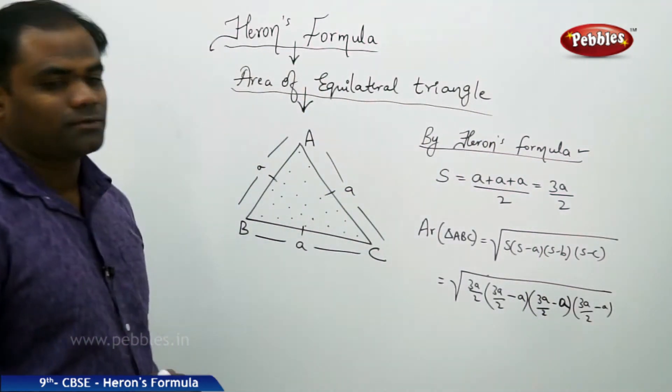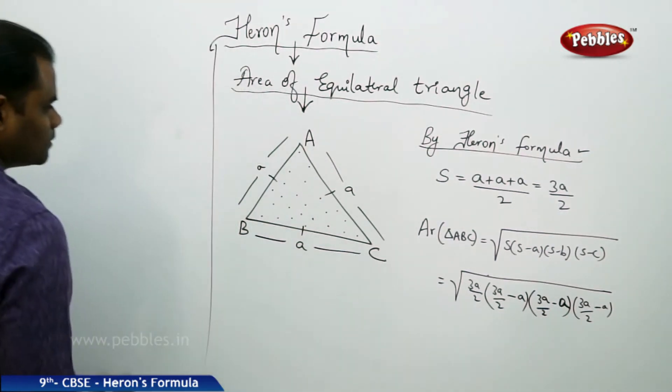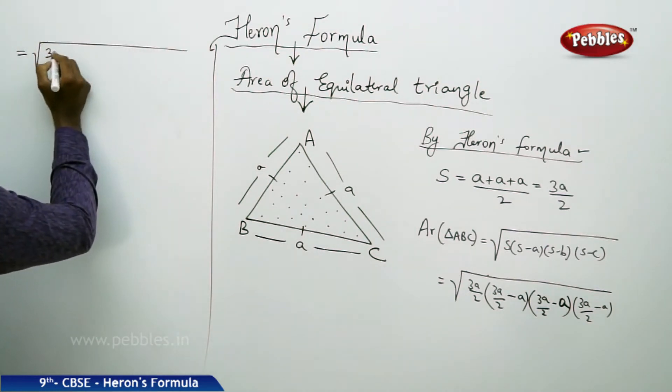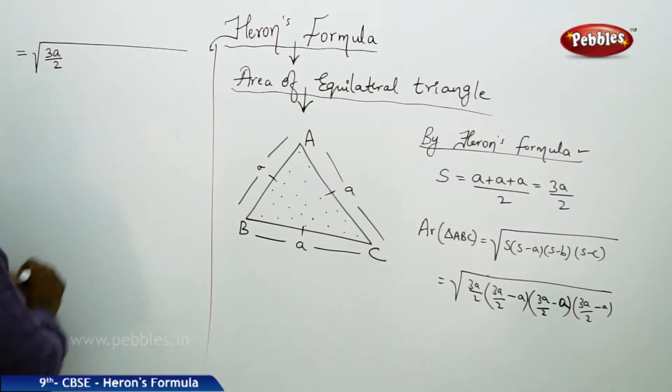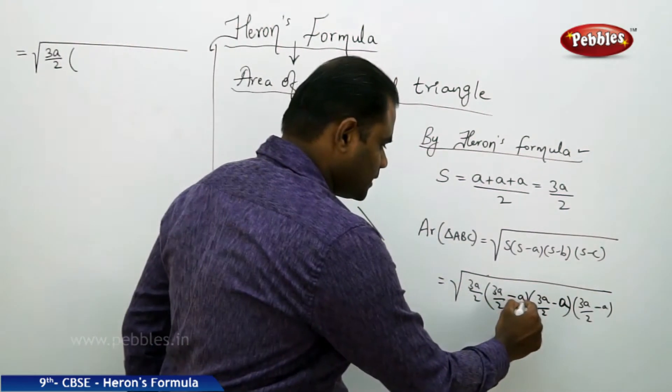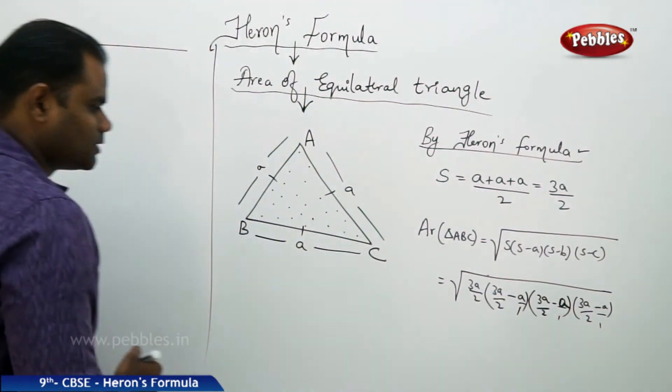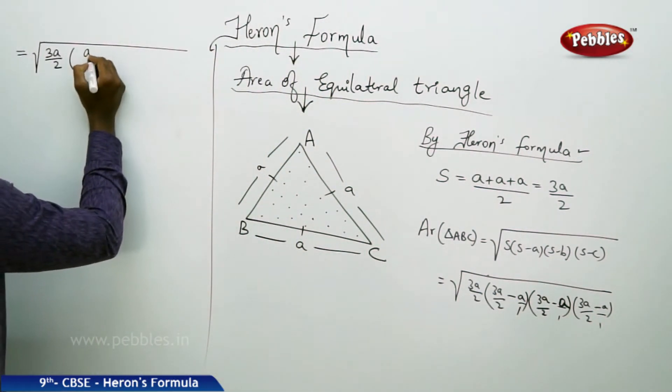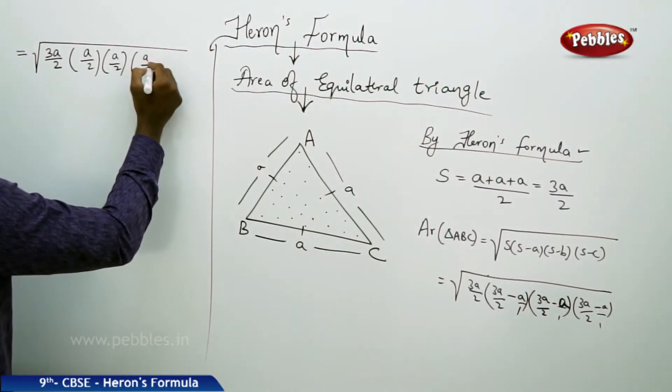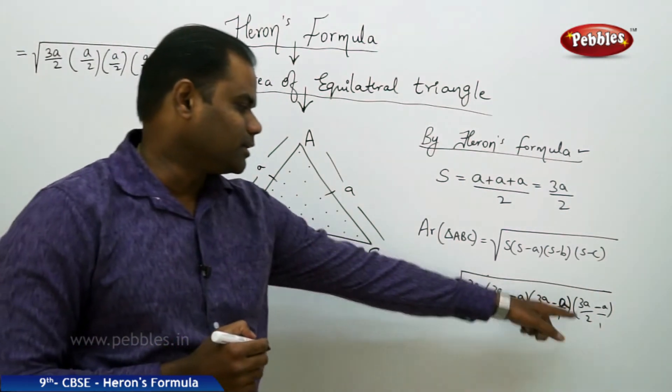So S is what we get. Now on further simplification, I get this to be root of 3A by 2 times, I take the LCM of each of the sums. So this becomes 3A minus 2A which is A by 2 times A by 2 times A by 2, is what I get for each of the terms.